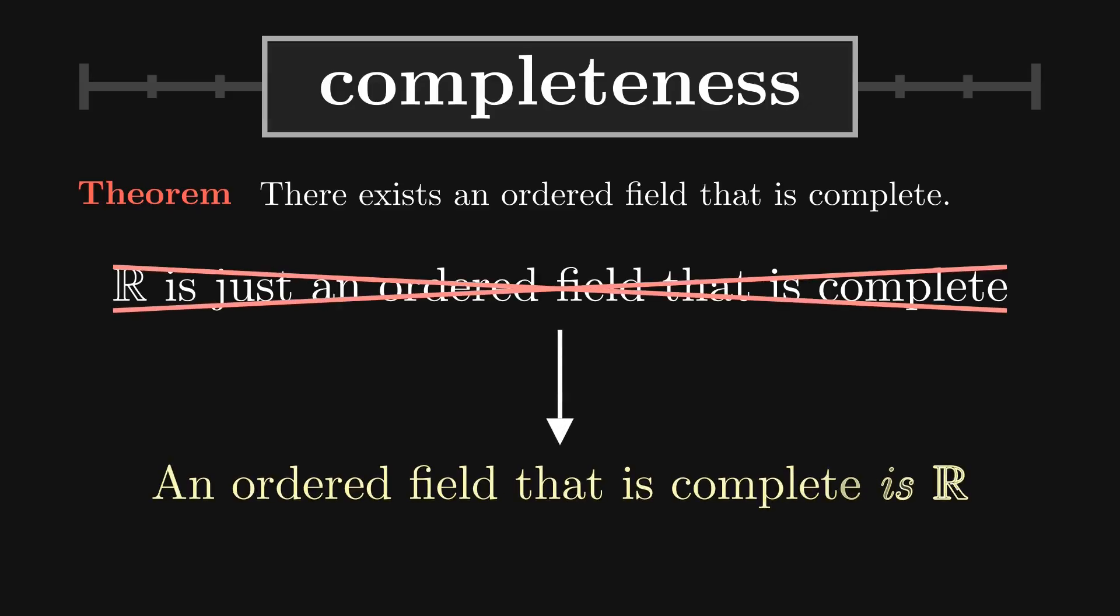I want to stress that this isn't just some useful property that R has which we prove. This is, in essence, what defines the real numbers. It's a way to uniquely categorize this structure that has no gaps.